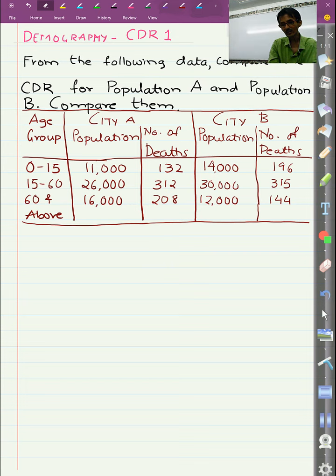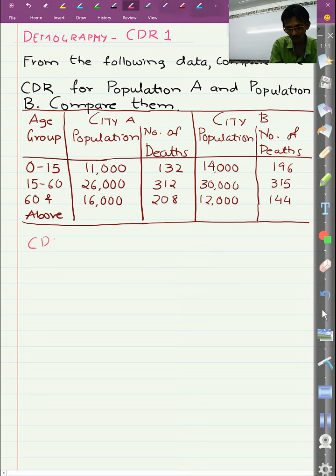As you can see, we are given the data of the population and the number of deaths in two cities A and B. We have been given the population and death as per the age group. The formula for CDR is: CDR is total number of deaths over the total number of population. Normally CDR and SDR are measured per thousand.